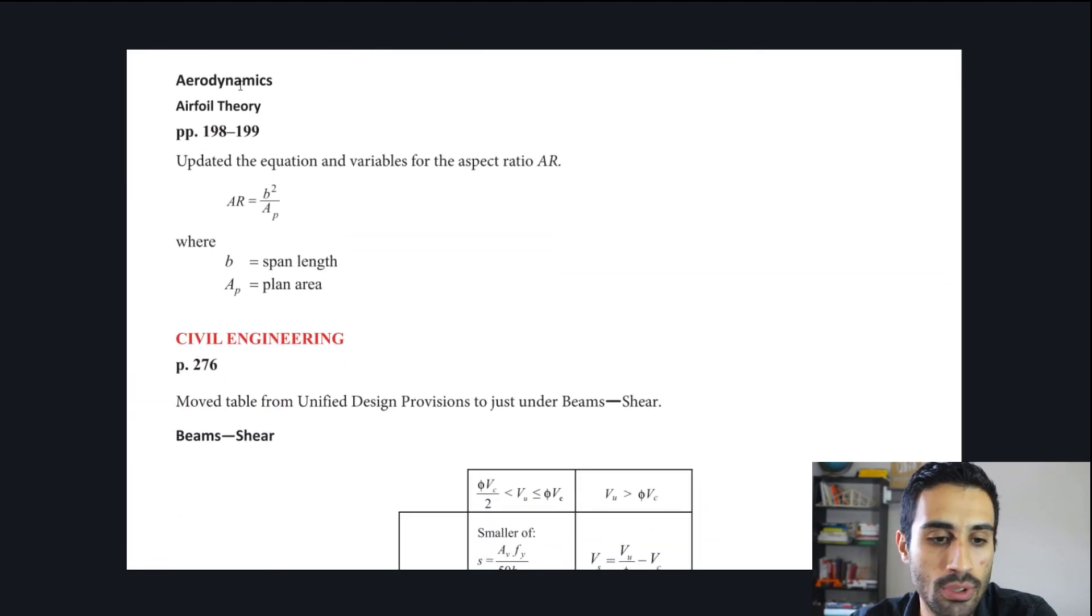Next one is aerodynamics. This is for more FE mechanical. We know airfoil theory and they just updated this equation. Basically, they removed the other equation that had the chord length, the C value, and they just kept this equation. That's all they did for that to find the AR value, the aspect ratio.